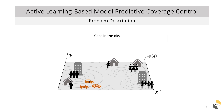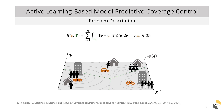The agents cover the area with respect to some environmental demands reflected by the density function phi. In the chosen example, those demands might be given by the population density distribution. The aim of coverage control is then to place or steer the agents into a configuration such that each agent is assigned an equal amount of density value, here reflected by an equal amount of potential customers. Mathematically, an optimal configuration is defined as a local minimum of the so-called locational optimization function, which considers the positions and partitions the environment, assigning each agent its own partition.